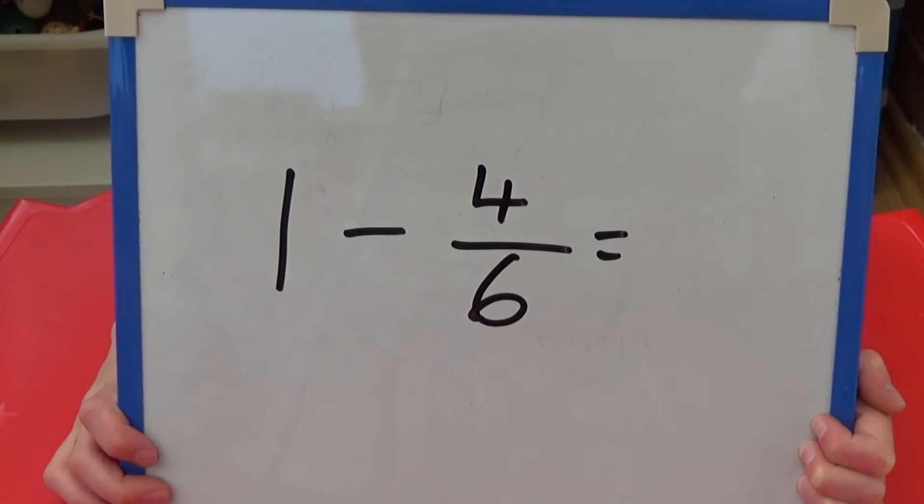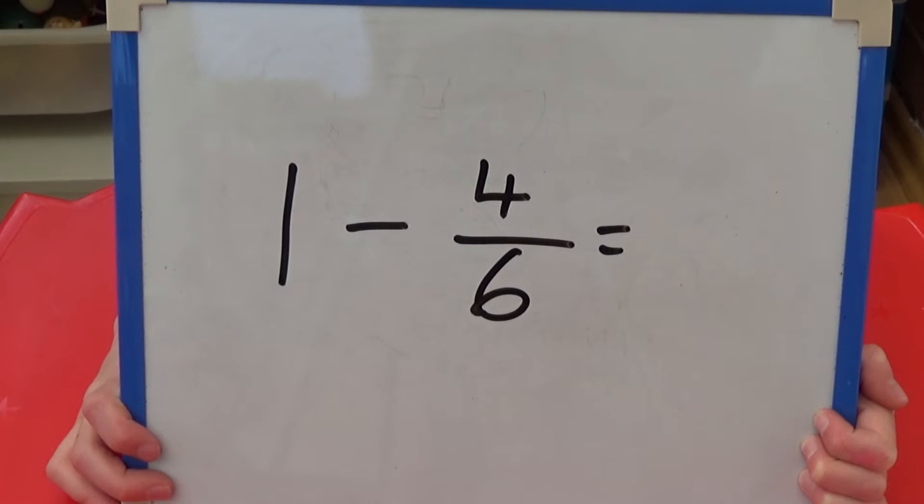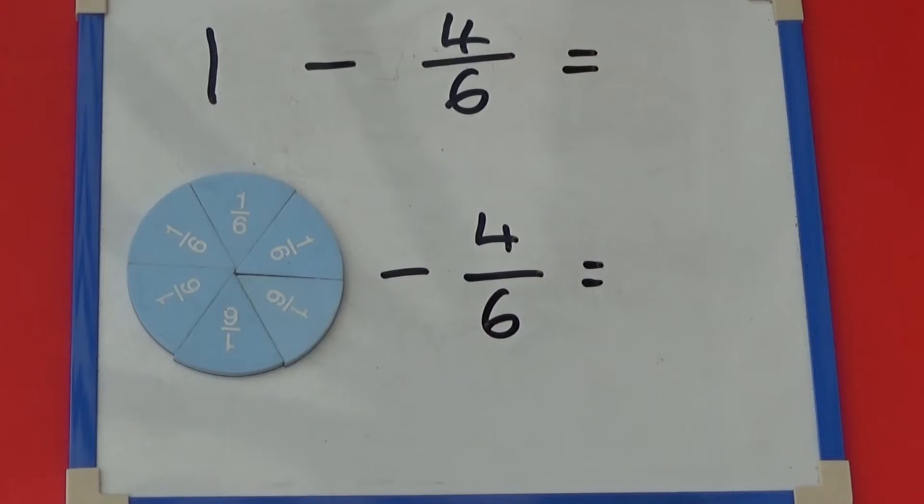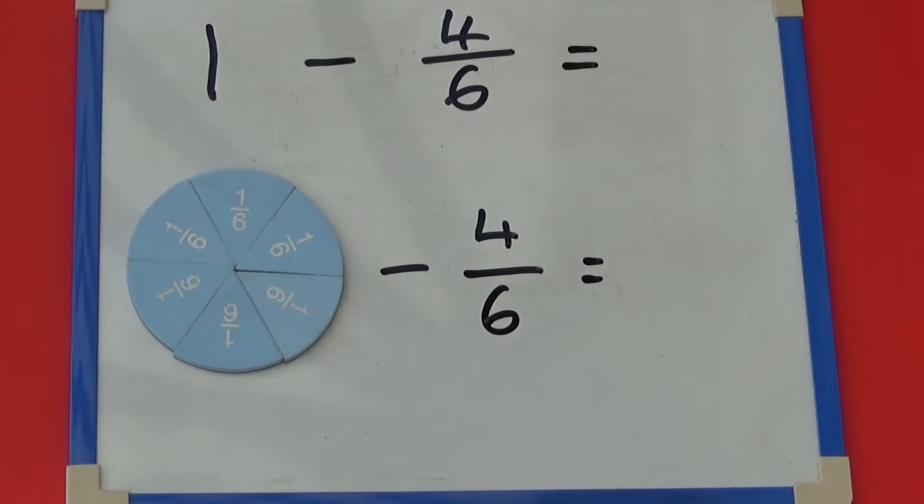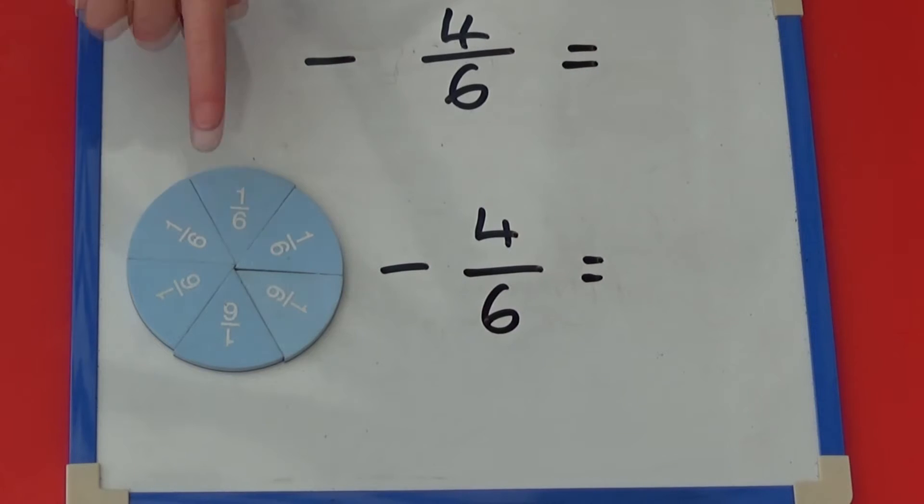First we're going to look at one whole take away four sixths. As we are subtracting sixths, we need to look at our fraction circle which is split into sixths or six equal parts.